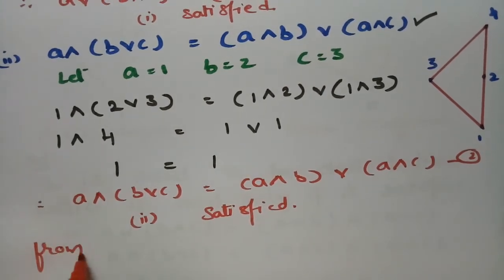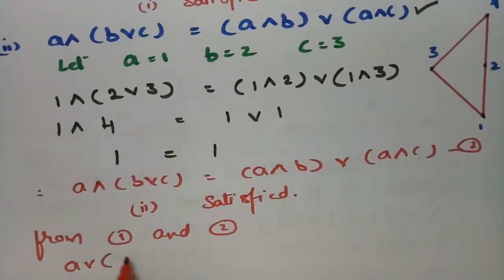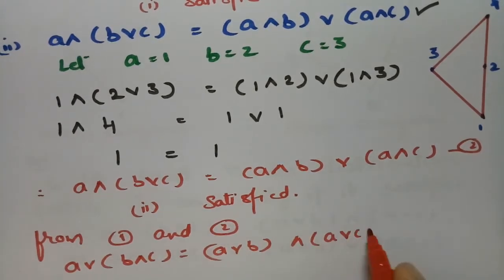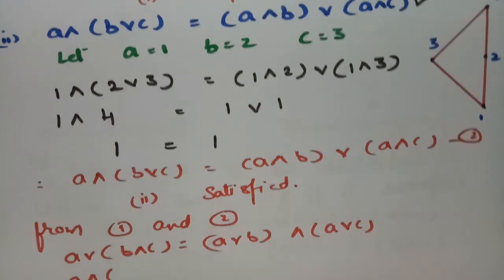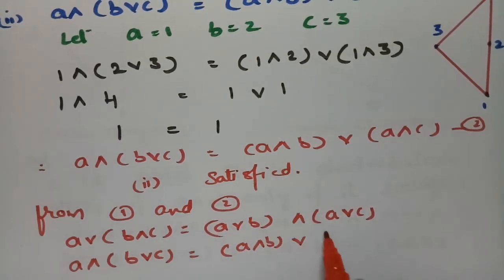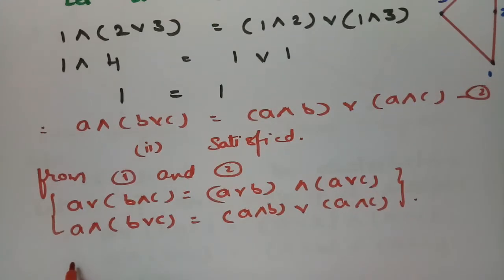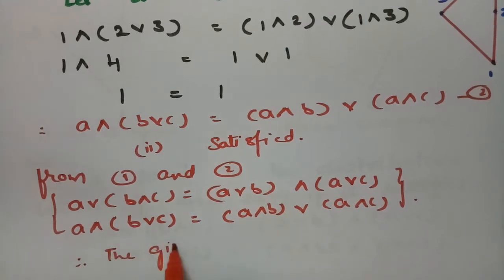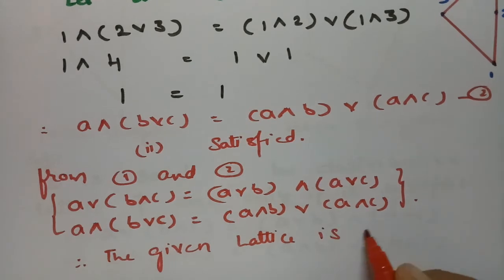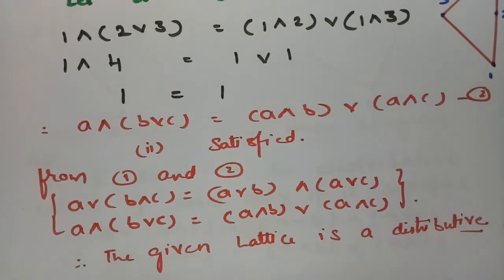From equations 1 and 2, we have: A join (B meet C) = (A join B) meet (A join C), and A meet (B join C) = (A meet B) join (A meet C). Both conditions hold. Therefore the given lattice from the first Hasse diagram is a distributive lattice.